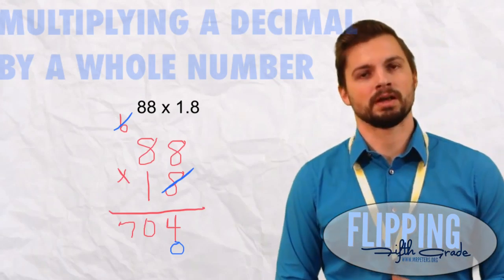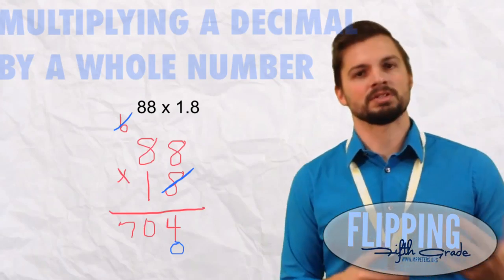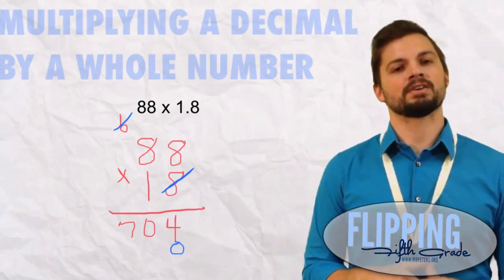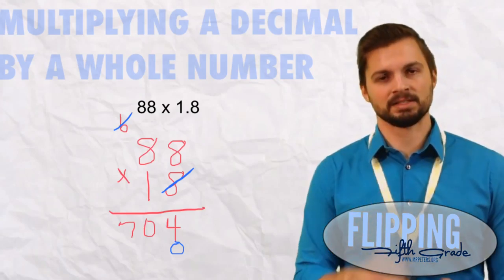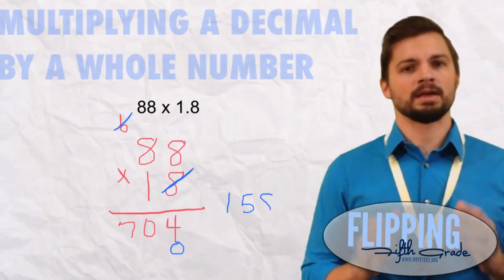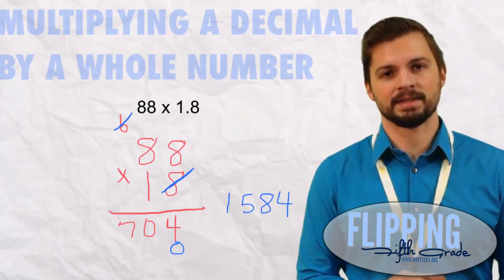So now we add our two partial products, 704 plus 880. We're going to get 1584. We're not done. We need that last step. Let's go back to the original problem and count how many digits are behind that decimal.